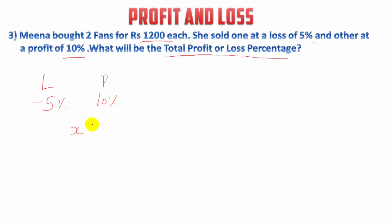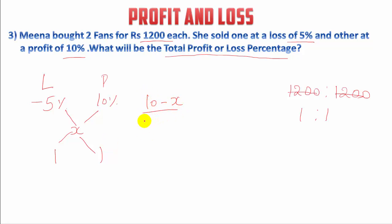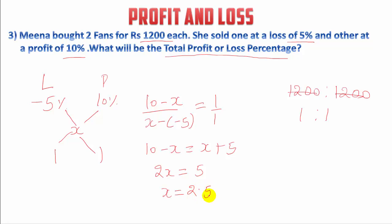Let total profit or loss percentage be x. Since both fans cost Rs.1200 each, the ratio between them is 1:1. Using the allegation method: (10 − x) / (x − (−5)) = 1/1. So 10 − x = x + 5, giving 2x = 5, and x = 2.5%. Since the value is positive, there is a profit of 2.5%. If the answer were negative, it would indicate a loss.